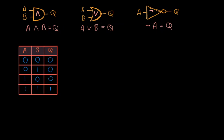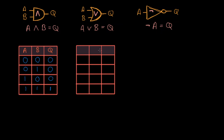For an OR gate we have the same columns — A, B, and Q — and the same input combinations. If both inputs are 0 the output is 0, but if either input is 1 the output is 1. So the outputs are: 0,0 → 0; 0,1 → 1; 1,0 → 1; 1,1 → 1. There is also an exclusive OR gate where the last row would be 0, but that's a separate topic.